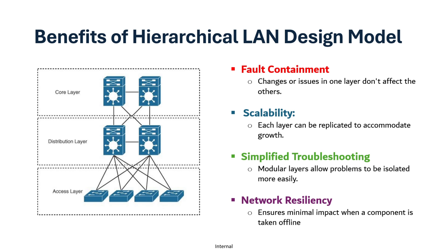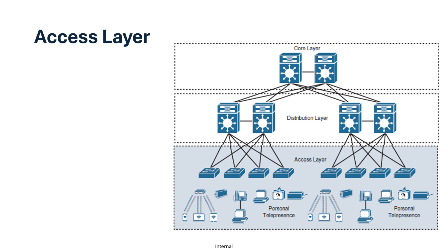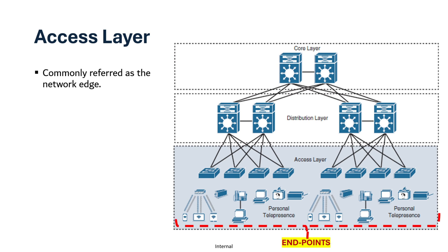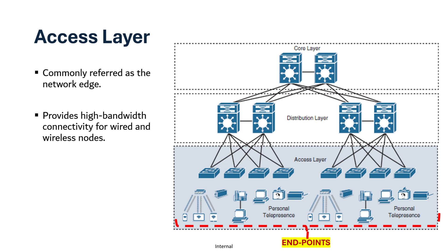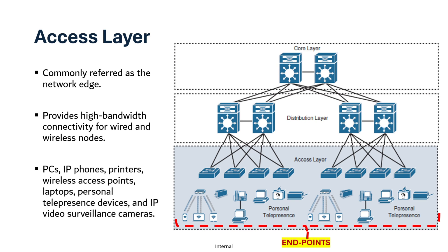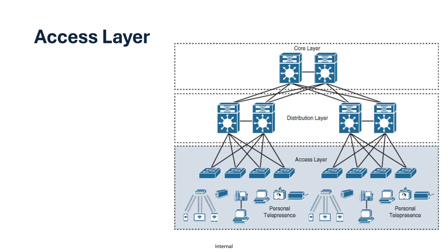Let's look at each layer in detail, starting with the access layer. The access layer, also commonly referred to as the network edge, is where endpoints connect. It provides high bandwidth connectivity for wired and wireless nodes — devices such as PCs, laptops, IP phones, printers, wireless access points, personal telepresence devices, and IP video surveillance cameras. The access layer plays a crucial role in enforcing security policies, because if you want to block unauthorized access, this is the place.